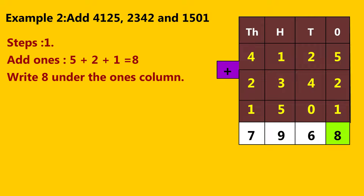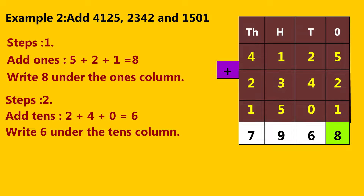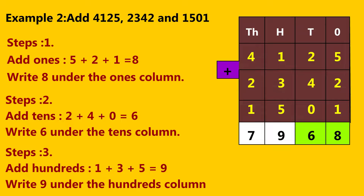Step 2: Add tens. Two plus four plus zero is equal to six. Write six under the tens column. Step 3: Add hundreds. One plus three plus five is equal to nine. Write nine under the hundreds column.